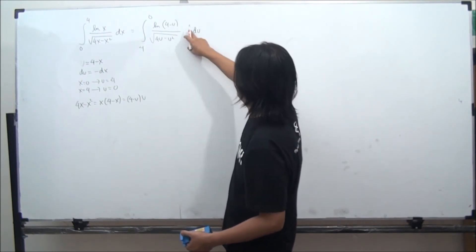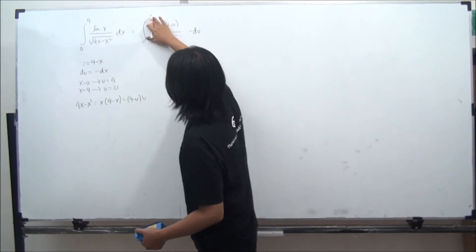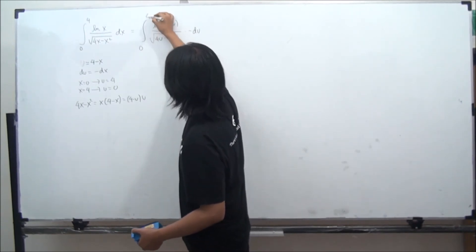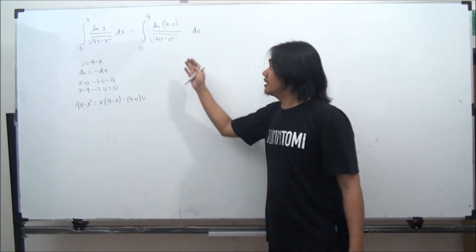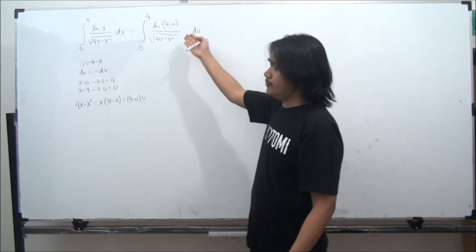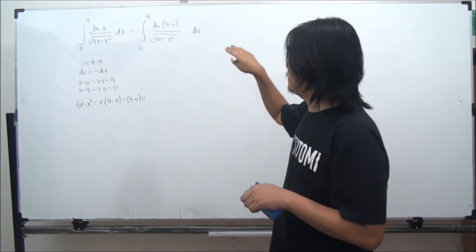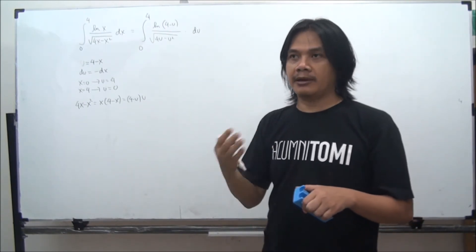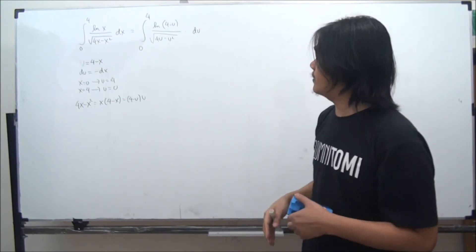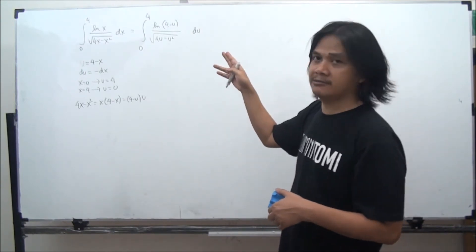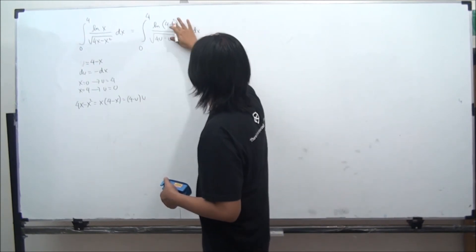We can get rid of that negative sign by switching back the limit of integration from 0 to 4. Notice that this u variable is just a dummy variable, where we can replace the variable with any letter that we like. Especially we can replace it with x. So we can write down this integral as that.